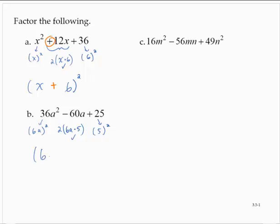So I can factor this as 6a and 5 squared. And it would be 6a minus 5 due to the sign on the 60a.